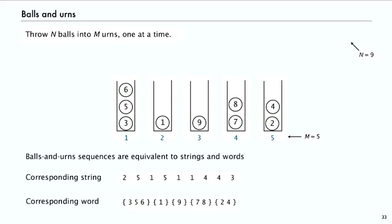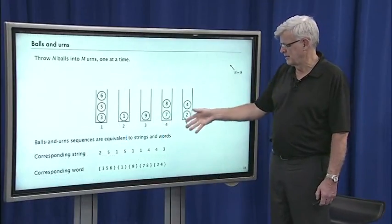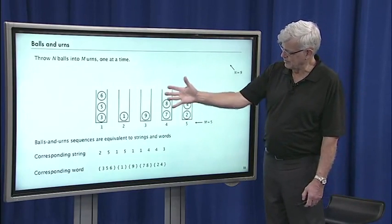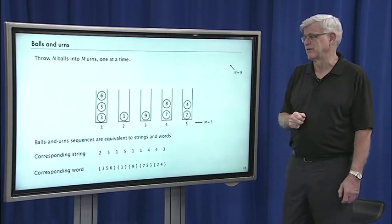So balls and urn sequences are equivalent to both strings and words. Sometimes we use that model for describing these objects. It's more like words in terms of its sequence of sets of objects.